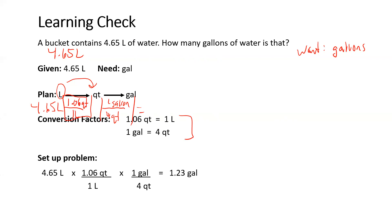And right there, 4.65 liters, the liters cancel. In one liter there's 1.06 quarts. In one gallon there's 4 quarts and I'm left in gallons. I see that my final answer has 3 sig figs and the correct unit. And it makes sense too because I have to divide it by 4.